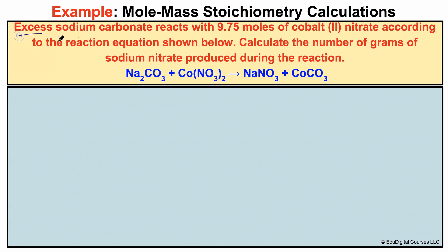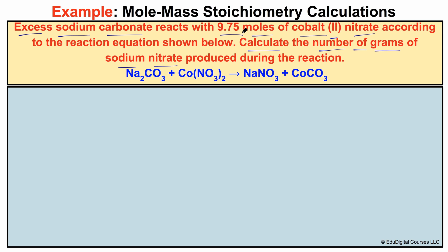In this example, excess sodium carbonate reacts with 9.75 moles of cobalt-2 nitrate according to the reaction equation shown below. We need to calculate the number of grams of sodium nitrate produced during the reaction. We have sodium carbonate reacting with cobalt-2 nitrate, producing sodium nitrate and cobalt-2 carbonate. We are trying to figure out the number of grams of sodium nitrate produced when 9.75 moles of cobalt-2 nitrate are consumed.